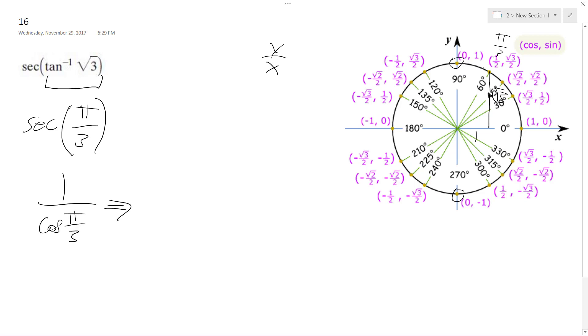So, cosine of pi over 3 is equal to 1 over 1 half, and you continue with this, and we get 1 divided by that same thing as 1 times 2 over 1, which is just going to be equal to 2. And that's it, I hope that helps. Thanks for watchin'.